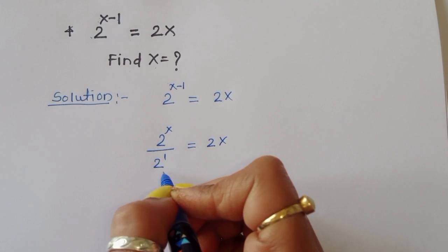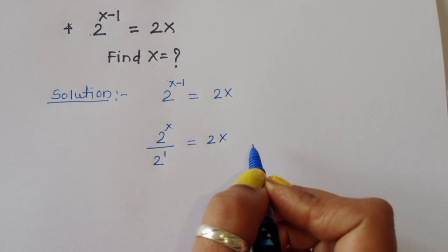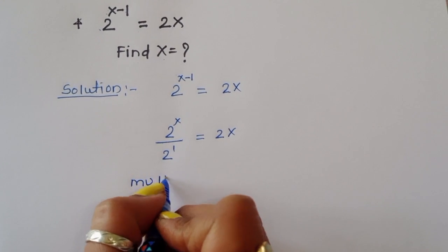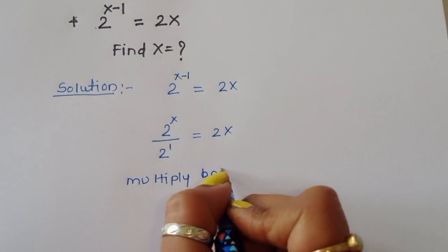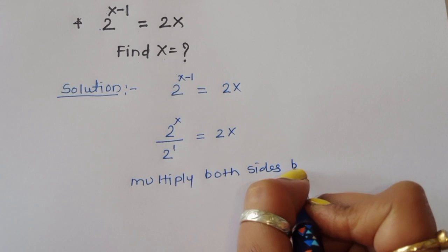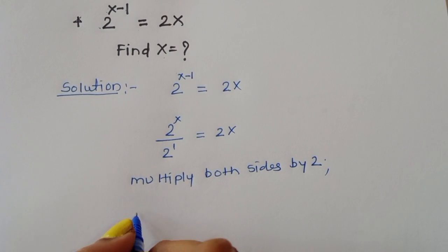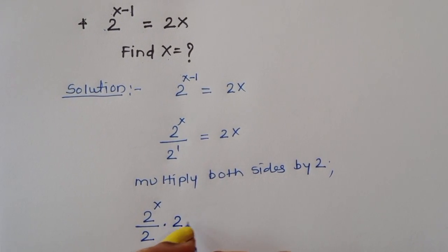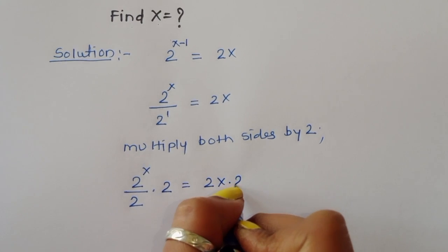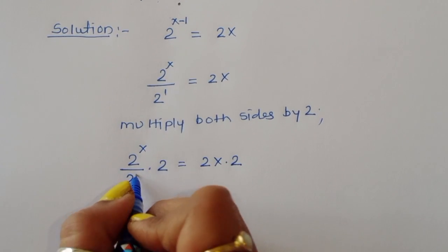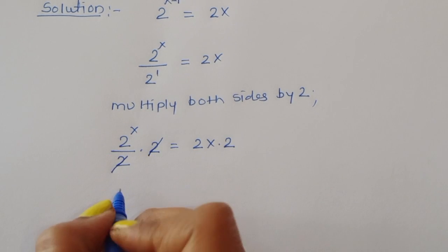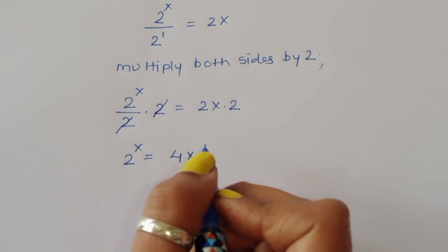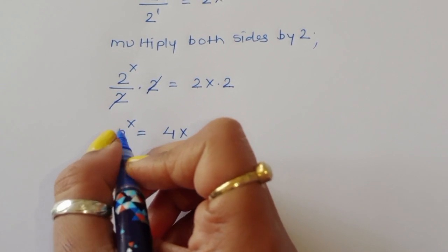Now 2 power x divided by 2 power 1 is equal to 2x. We multiply both sides by 2. Then we get 2 power x divided by 2 times 2 — this 2 cancels — so we can write 2 power x is equal to 4x.